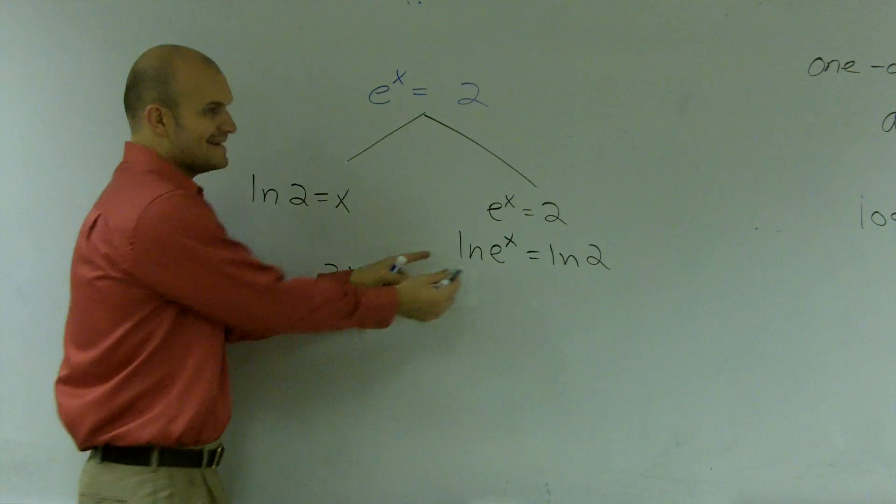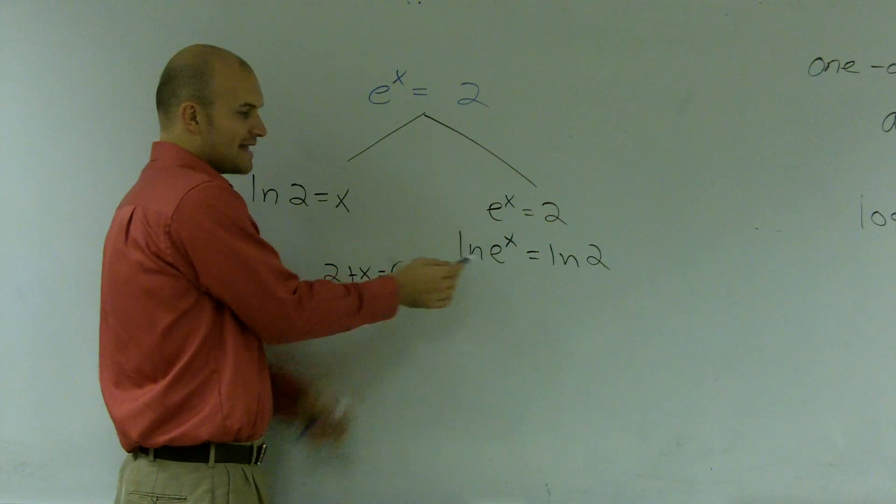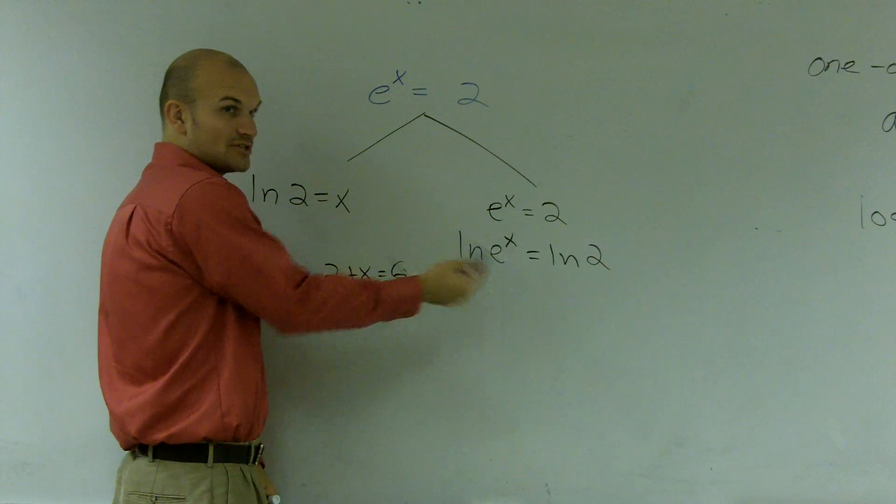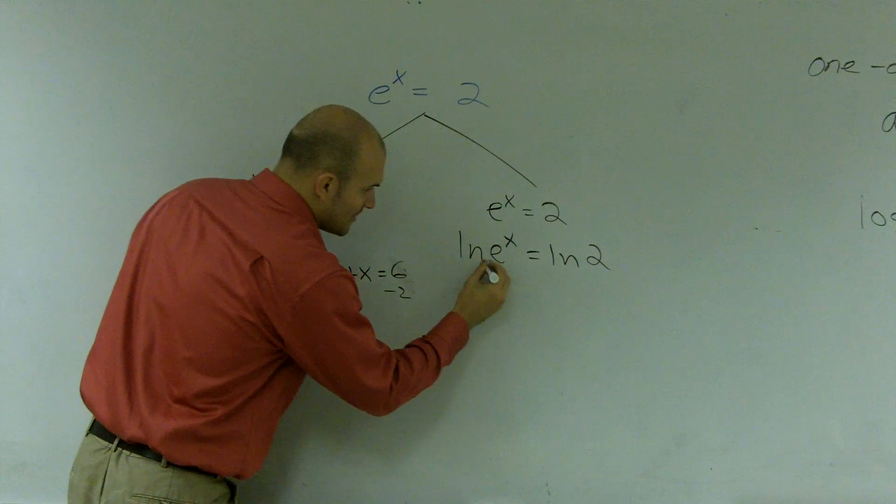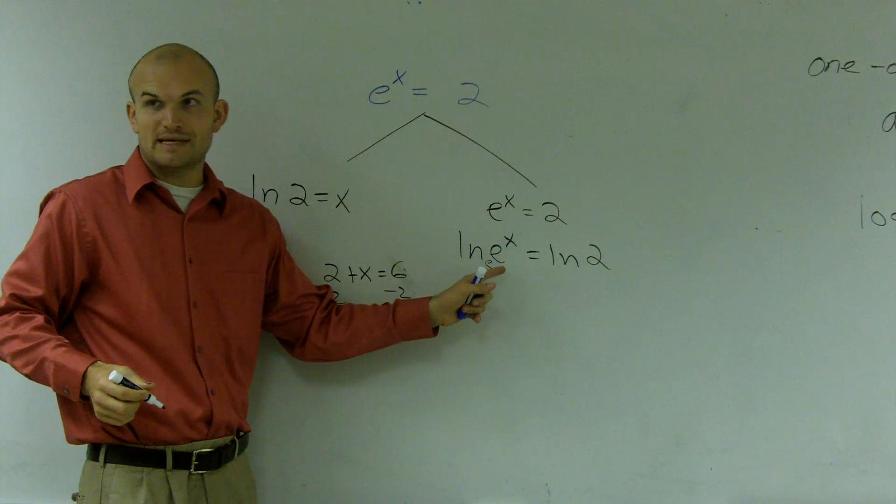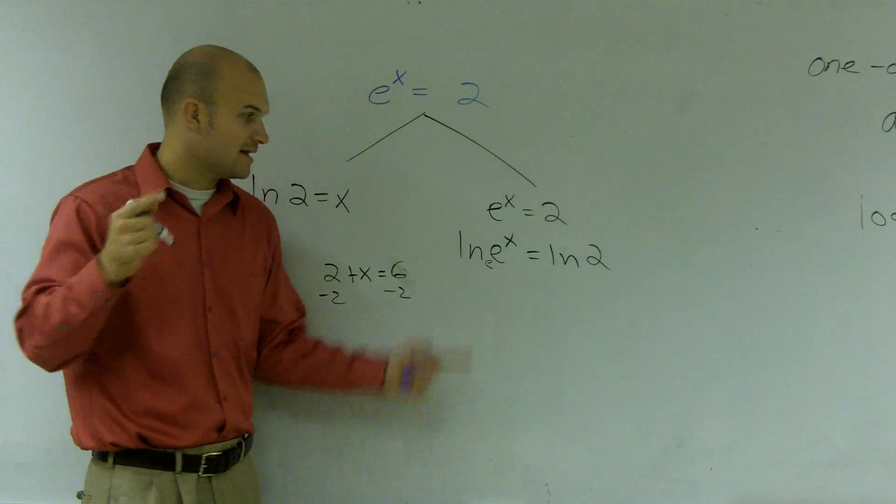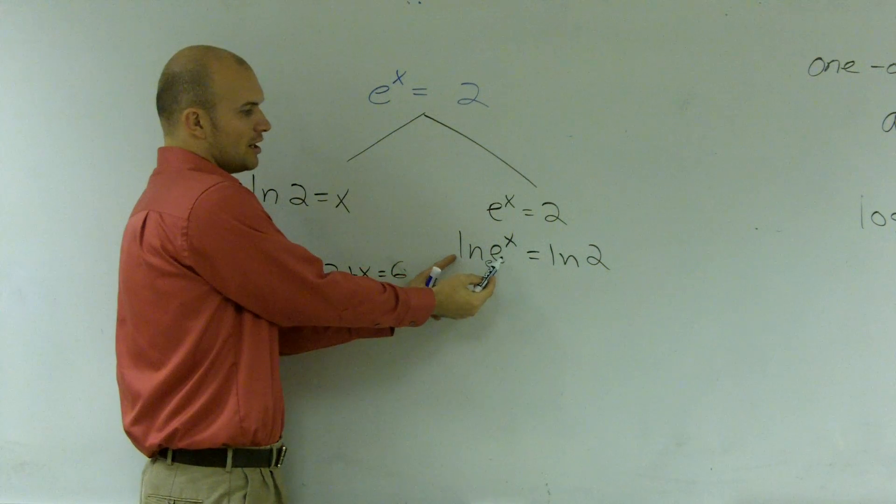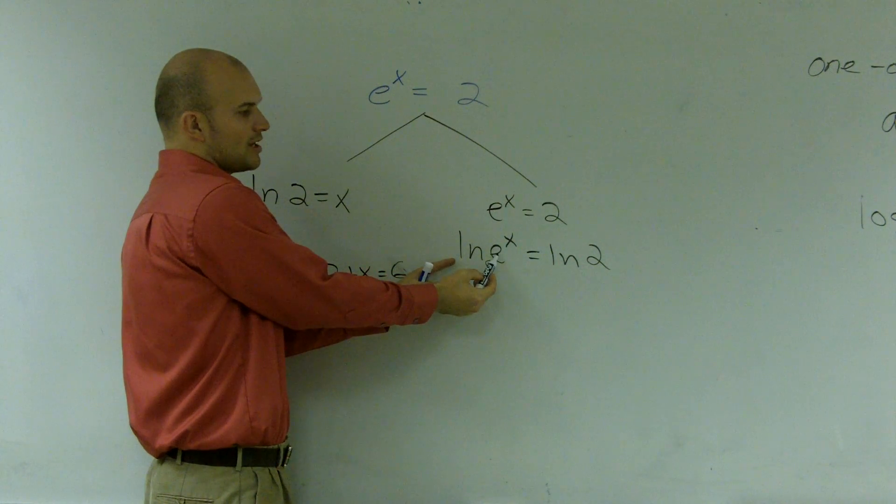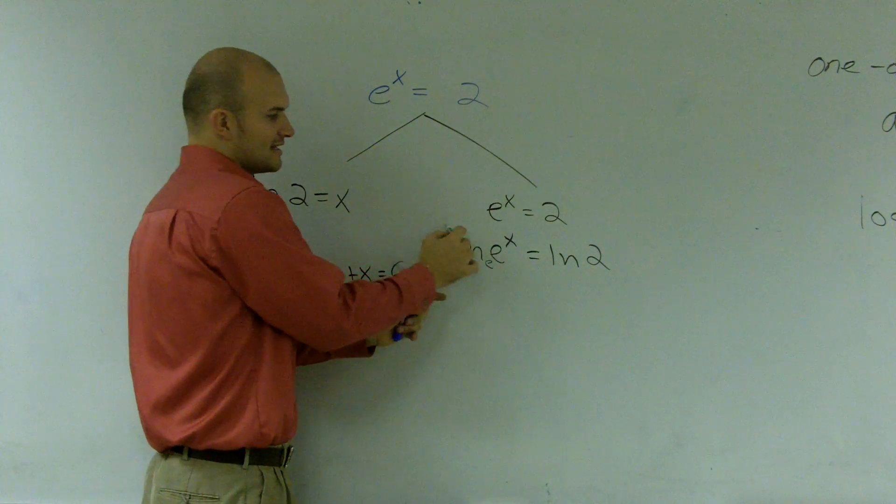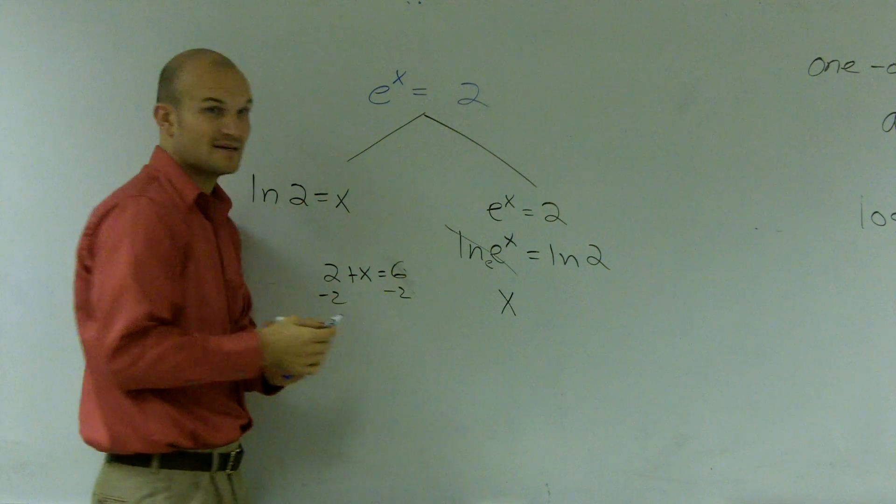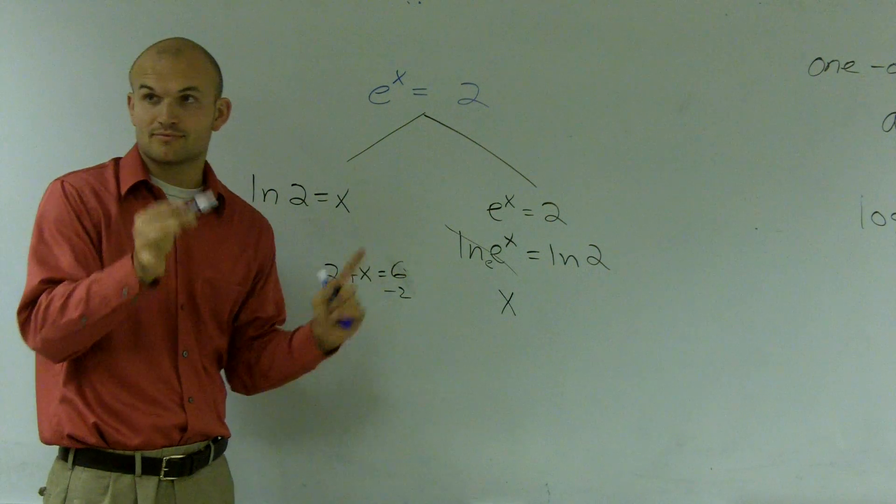Now I'm left with ln of e. Which I know ln of e, right? This is a little base e. e raised to what number gives you e? 1, right? And whenever you have your base and your logarithm are raised to the same number, that's just going to cancel out, and it's just going to leave you with x. That's your inverse property that I did previously.